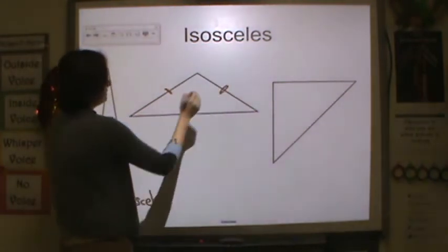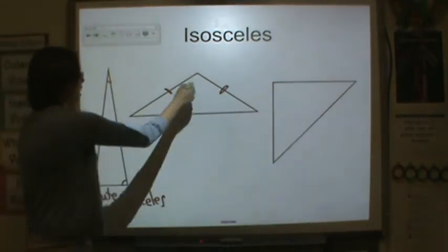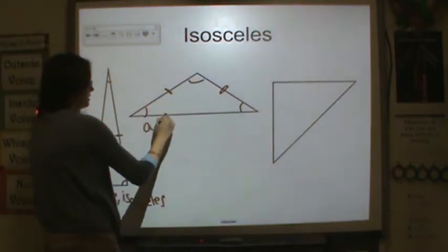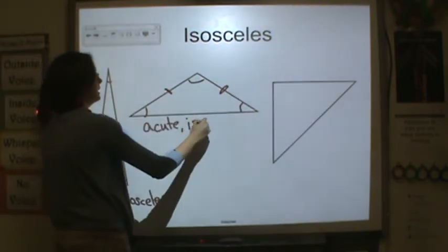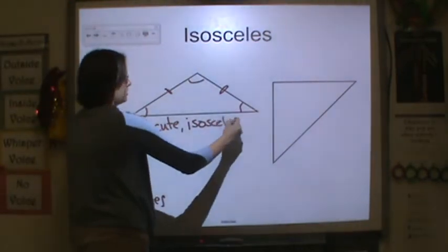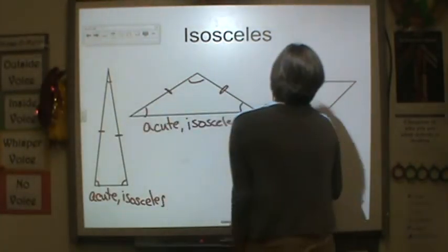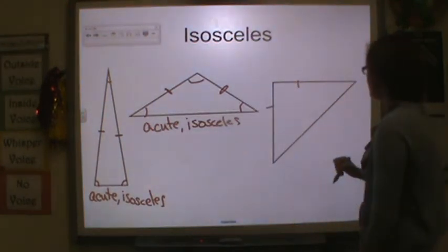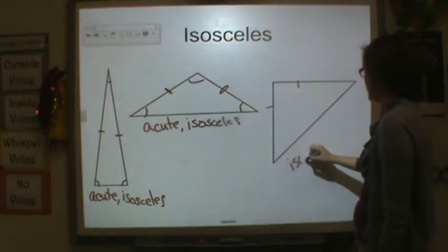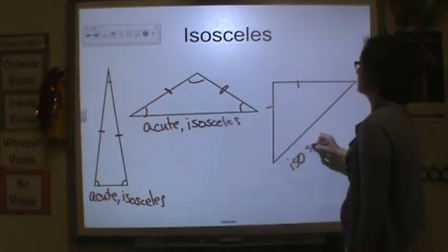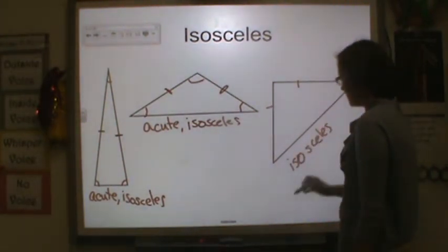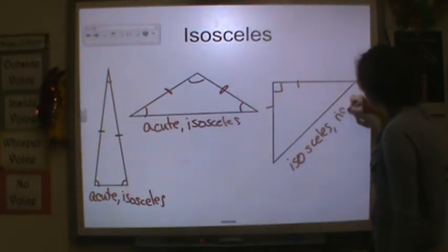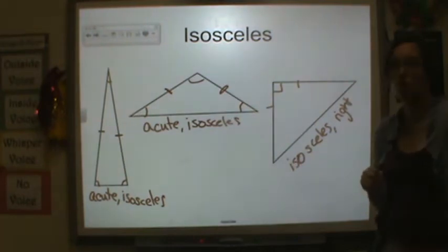It looks like this side and this side are the same length. All of the angles are acute, so you have another acute isosceles triangle. And last, we have two sides the same length, so you have an isosceles triangle. But we also see right here we have a right angle, so we have an isosceles triangle that is also right.